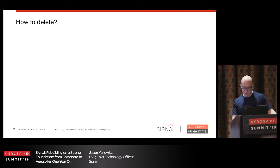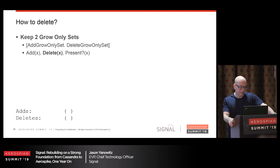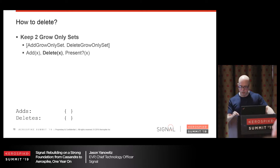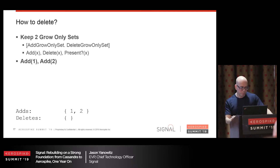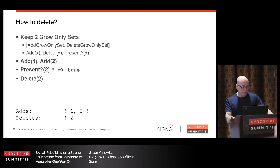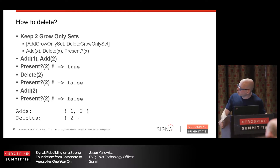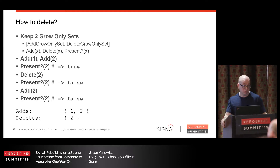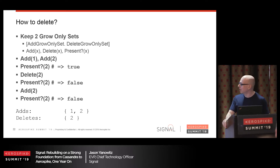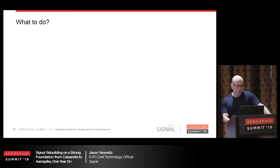So how do we delete? Let's keep two grow-only sets — one that tracks additions and one that tracks deletes. We add some items to the add set. If we ask if the two is there, we check deletes — it's empty — so we look in adds, there's a two, so yes. Now let's delete the two and ask if it's there: we check deletes, there's a two, we short circuit and say nope, the two is not present anymore. Now let's add the two back in — nothing changes because it's idempotent. And we have a problem: it's effectively a delete-once set, because we haven't captured causality. We need a partial ordering of events — a 'happens-before' relationship. In distributed systems, when you hear 'happens before,' you should think vector clocks — but they're kind of an operational hassle.